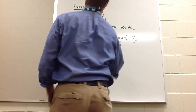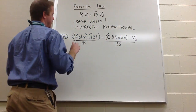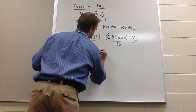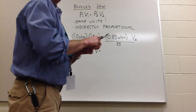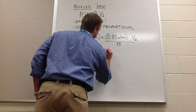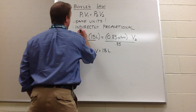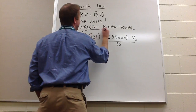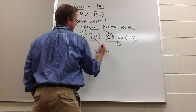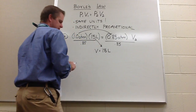We do the math on this. Two significant figures, two significant figures, two significant figures. Therefore, when you do your math, you get a volume equal to 18 liters. That's two significant figures. Does your answer make sense? Well, the pressure went down, therefore the volume should have gone up. So your answer indeed does make sense.